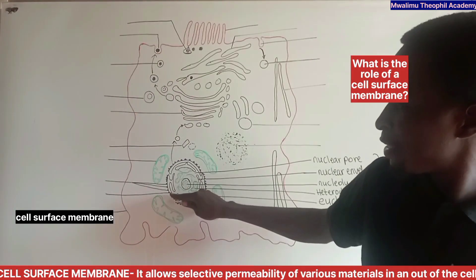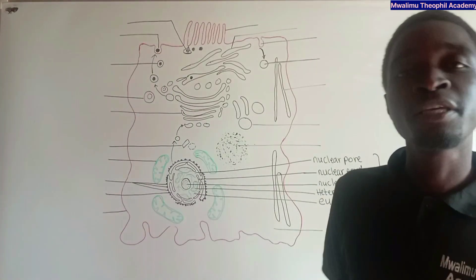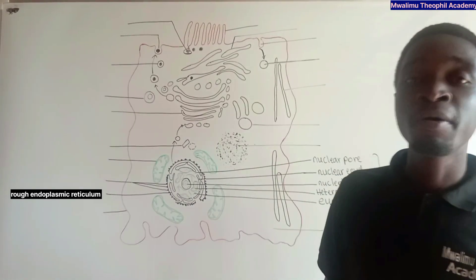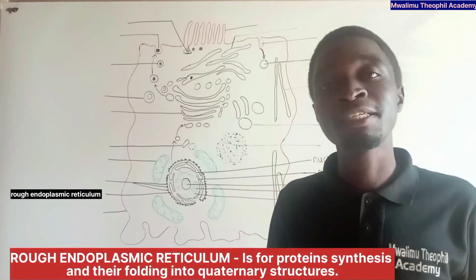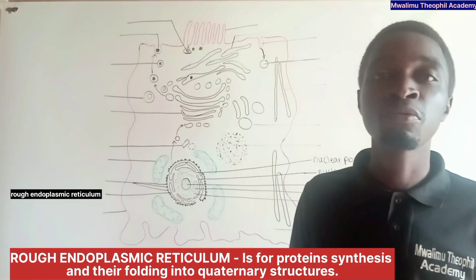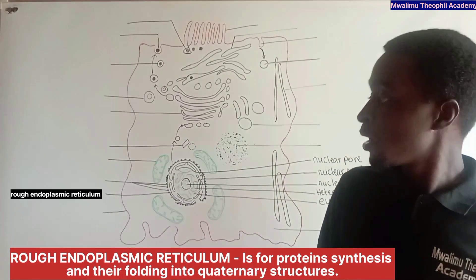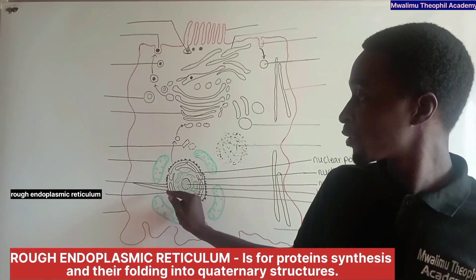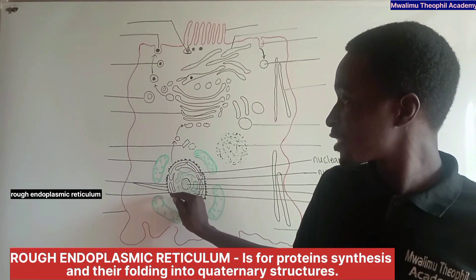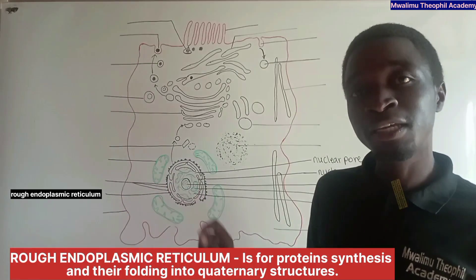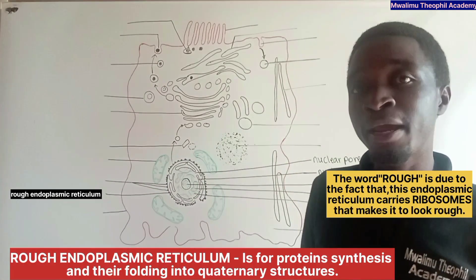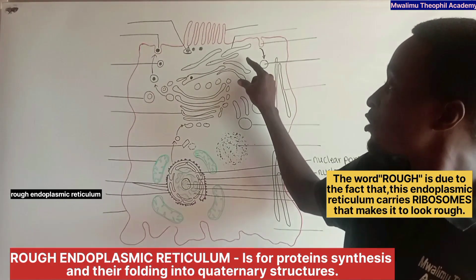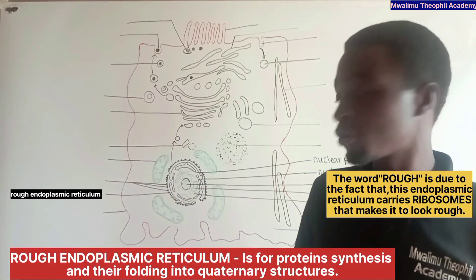This is the rough endoplasmic reticulum. The role of the rough endoplasmic reticulum is protein synthesis and the folding of proteins into quaternary structures. It is involved in protein synthesis because it carries ribosomes, as opposed to the smooth endoplasmic reticulum which does not have ribosomes.